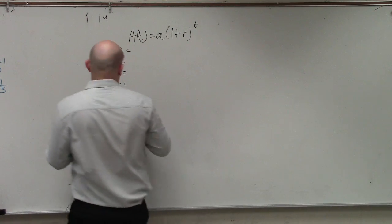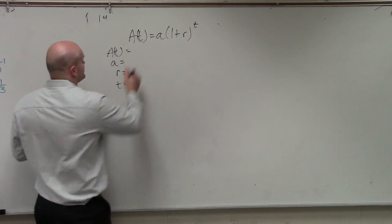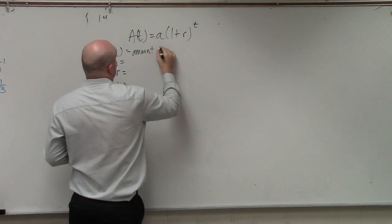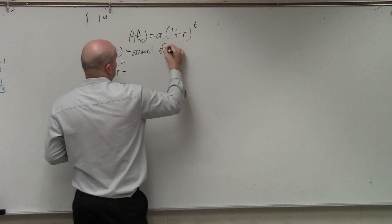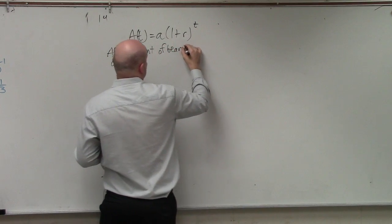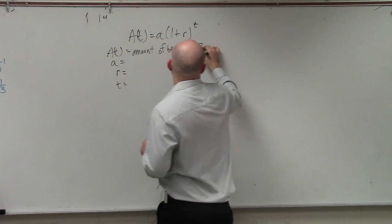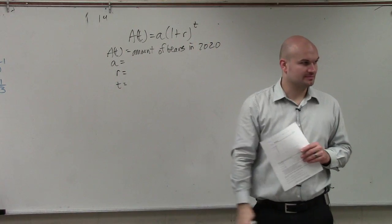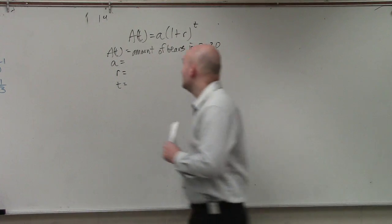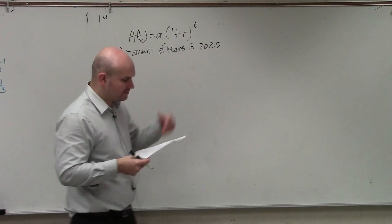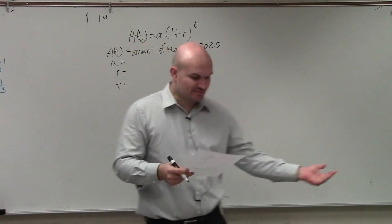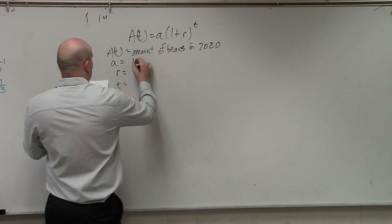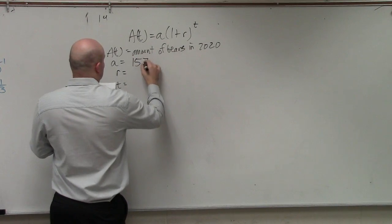A of T is going to be the amount of bears in 2020. Do we know the amount of bears in 2020? No. So that's what we're going to solve for. A is your initial amount. If we're starting this research from 2009, our initial amount is going to be 1,570.